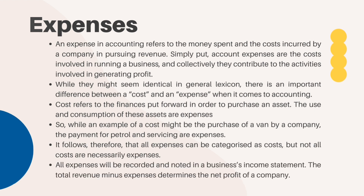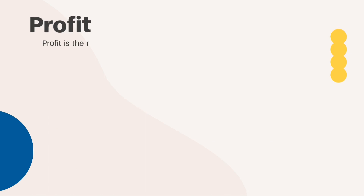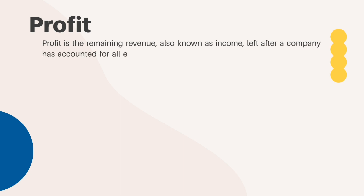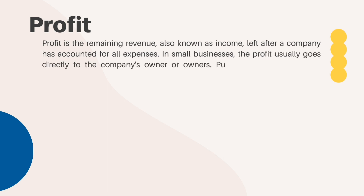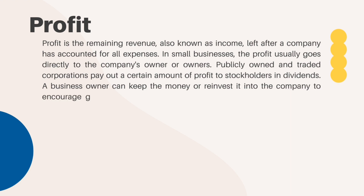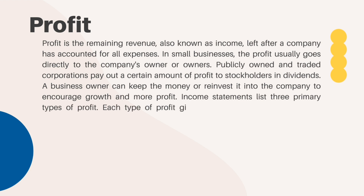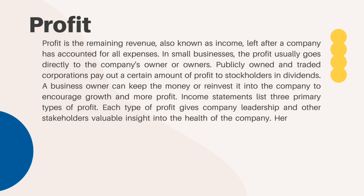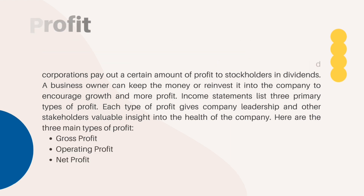Profit is the remaining revenue, also known as income, left after a company has accounted for all expenses. In small businesses, the profit usually goes directly to the company's owner or owners. Publicly owned and traded corporations pay out a certain amount of profit to stockholders in dividends. A business owner can keep the money or invest it into the company to encourage growth and more profit. The income statement lists three primary types of profit, each giving company leadership and stakeholders valuable insight into the health of the company: gross profit, operating profit, and net profit.